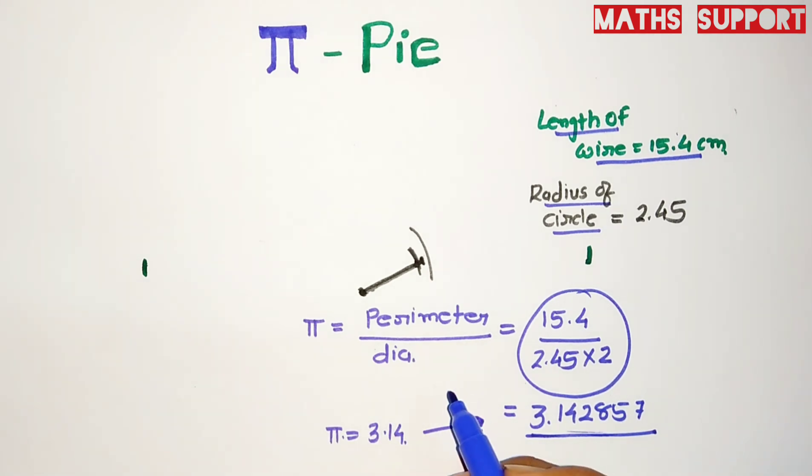If you think this experiment is worthwhile for finding pi, please do it yourself at home and comment the ratio you are getting. Whether it's 3.14 or not, please mention in your comment box. Thank you.